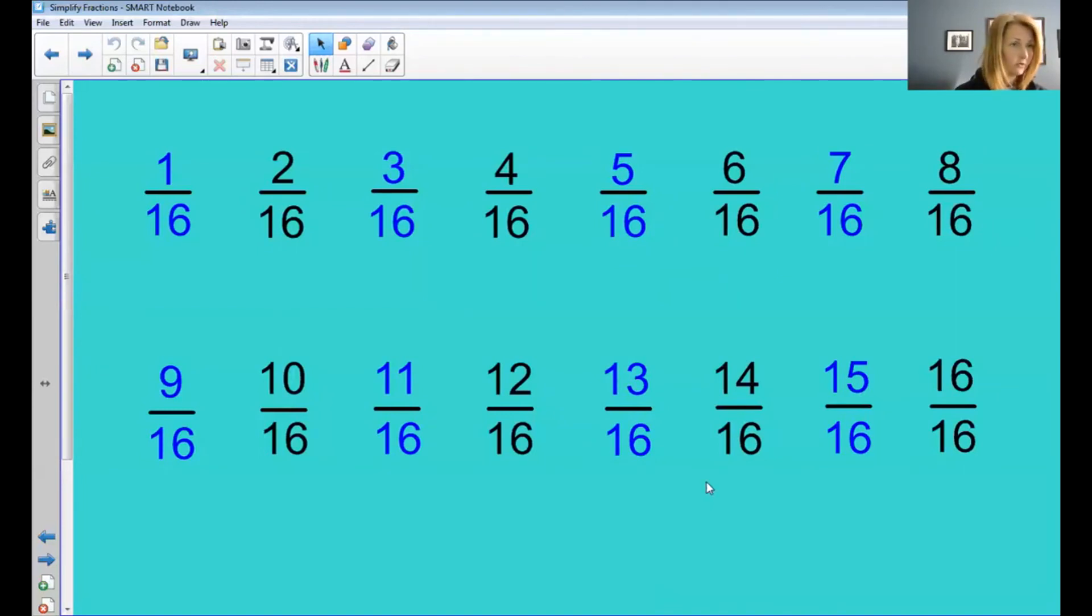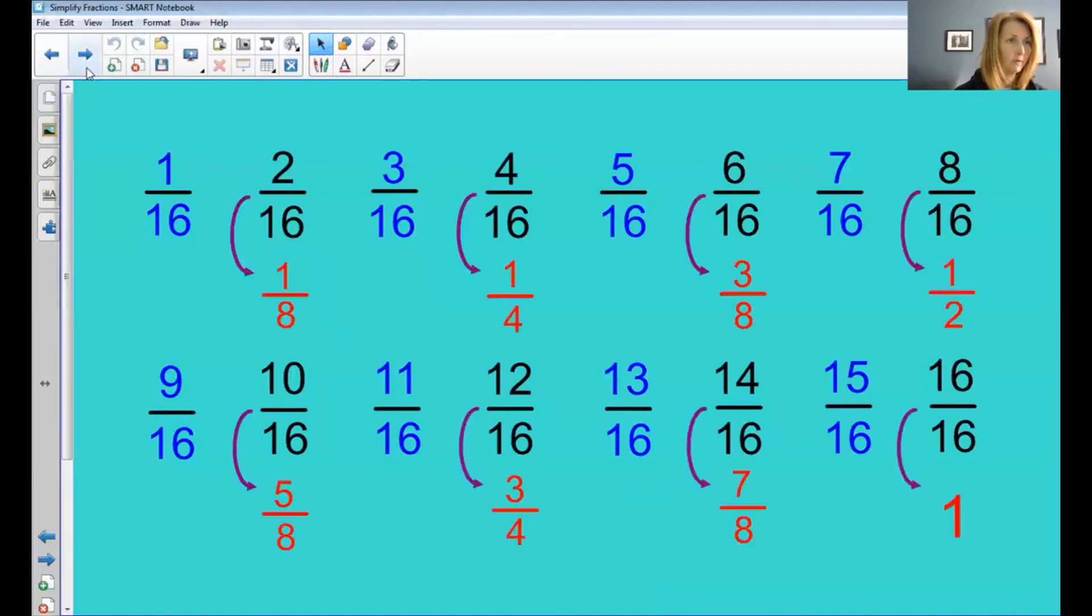The others, however, can be simplified. Two-sixteenths, for example, will simplify to one-eighth. Four-sixteenths simplifies to one-fourth. Six-sixteenths to three-eighths. Eight-sixteenths, of course, simplifies all the way to one-half.